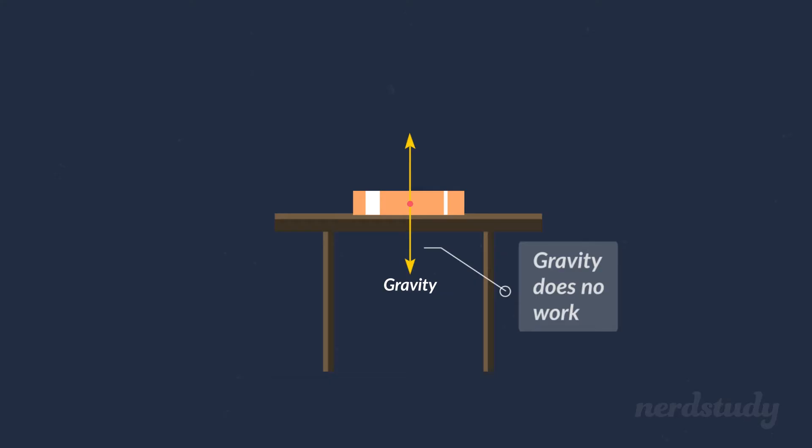Okay, so let's say we have a book on a table. It's not moving in any way, and it's just sitting there. Of course, gravity is pulling the book downward. But because the normal force from the table cancels out the force of gravity, nothing moves. So really, gravity isn't doing anything here. We could, in fact, say that gravity is doing no work.